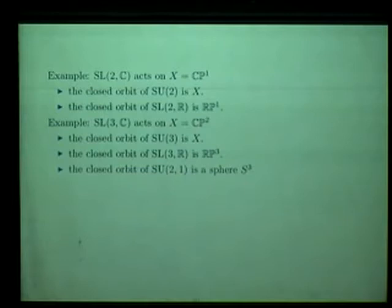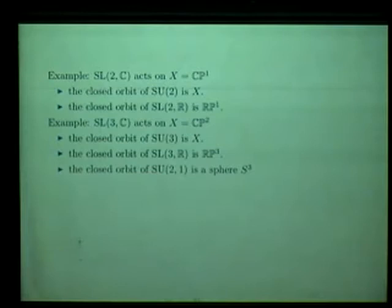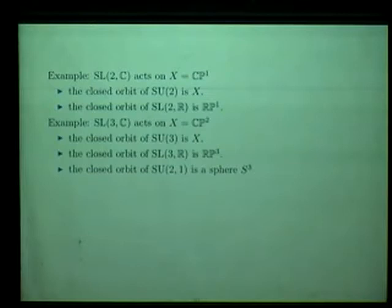S^3 has dimension 3, which is more than half the dimension of CP^2, so something is not quite right with this closed orbit — it's predicted by Wolf's theorem, but what I need to be happy is a flag space where the orbits by all real forms are of dimension 3. Let's see the next example. The closed orbit of SL(3,R) in CP^2 is actually RP^2, not RP^3 — thank you for the correction.